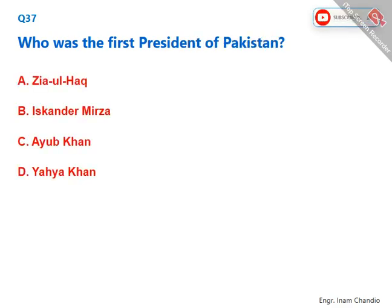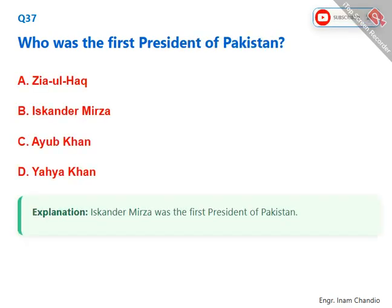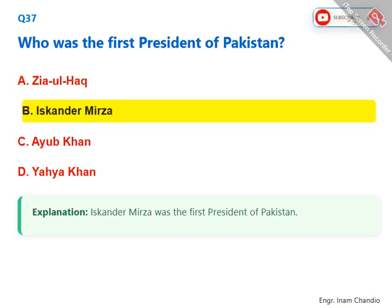Who was the first president of Pakistan? Iskandar Mirza was the first president of Pakistan. The correct answer is B. Iskandar Mirza.